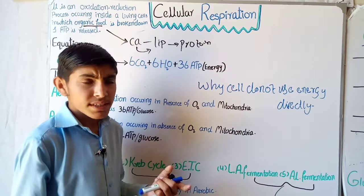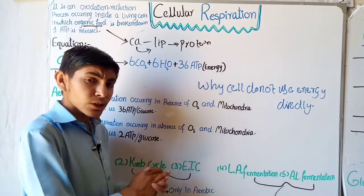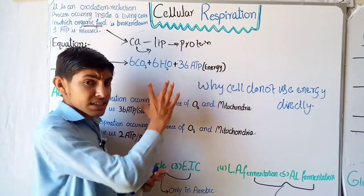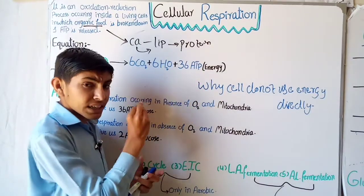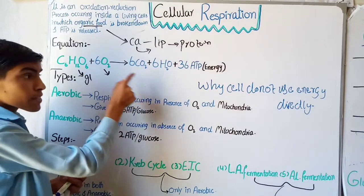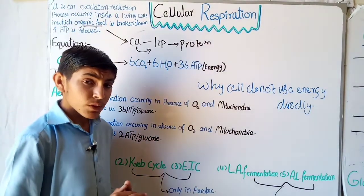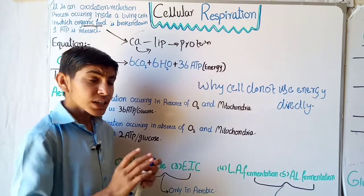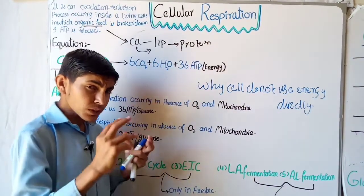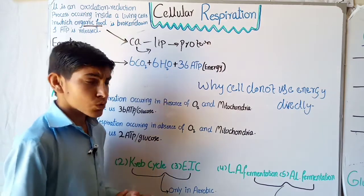Therefore, in order to protect from this damage, our cells store the released energy from organic food in the form of ATP. This ATP is stored inside the cell, and when the cell needs energy, it will be broken down again into a simpler form of energy that the cell can use.